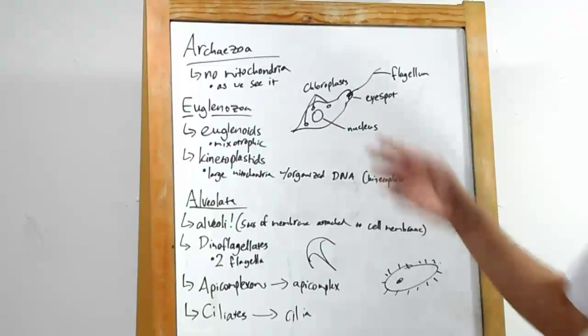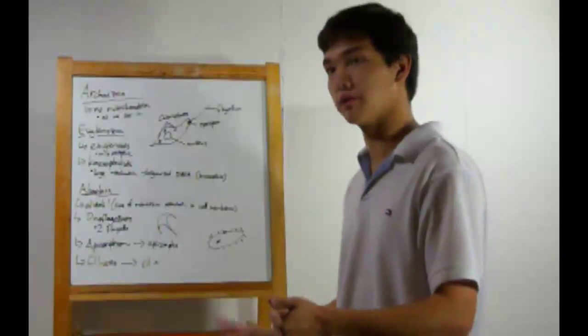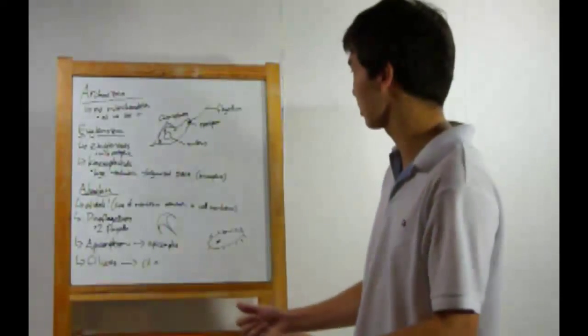Alright, next up. Euglenozoa. Two groups in here. Euglenoids. These are mixotrophic. That means they are both heterotrophic and autotrophic. They can perform photosynthesis and take in their own food.